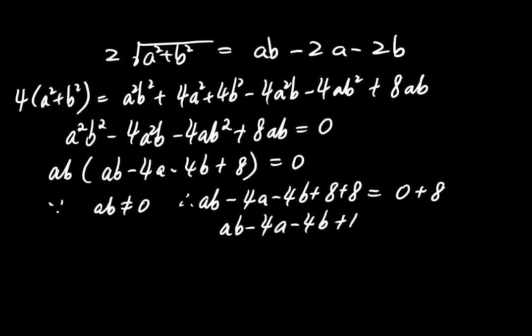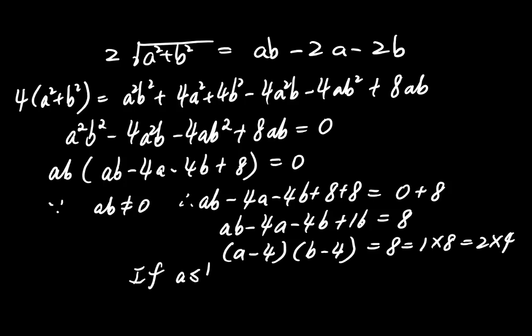This factors nicely as A minus 4 times B minus 4 equals 8. Now we solve the equation. A minus 4 times B minus 4 equals 8. The factor pairs of 8 are 1 and 8, 2 and 4.